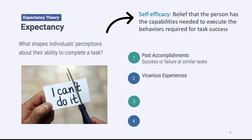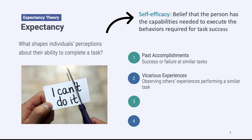Individuals also consider vicarious experiences, which shapes their self-efficacy. By vicarious experiences, we mean looking at what happens to other people and how they've performed a similar task. Students will look at other students in the classroom to see how they've performed, and use that to either believe they can do something or not. If everyone around you is doing well on an examination, you might believe you too can do well because others are showing it's possible.